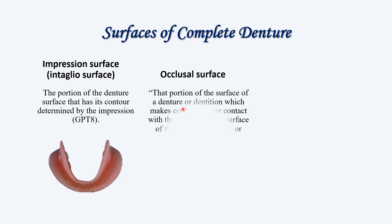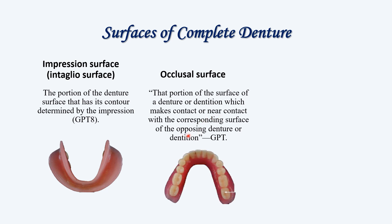Next, we have the occlusal surface. It will be the portion of the surface of the denture or dentition which makes contact or near contact with the corresponding surface of the opposing denture or dentition. So the occlusal surface means the teeth areas — this will occlude with the opposing teeth, that is with the corresponding surface of the opposing denture or dentition.